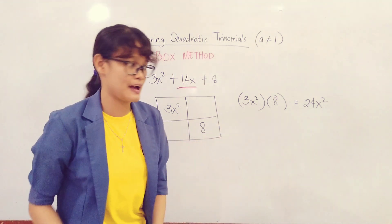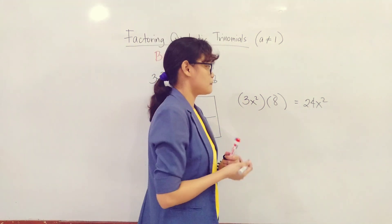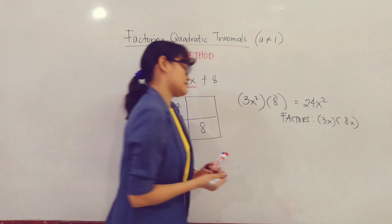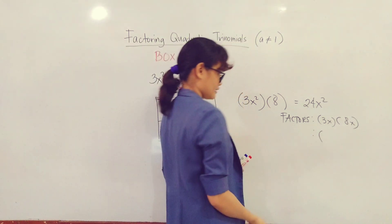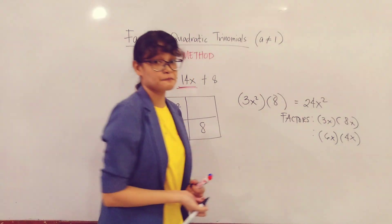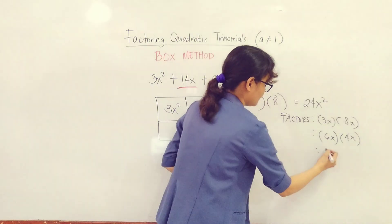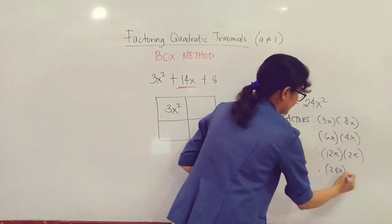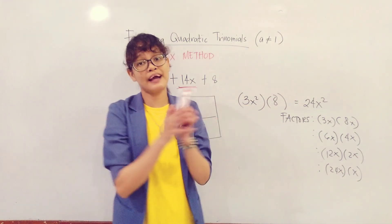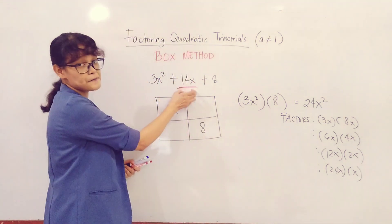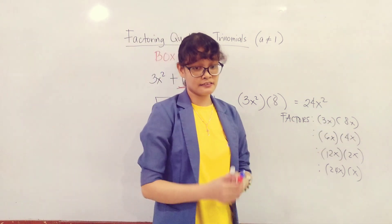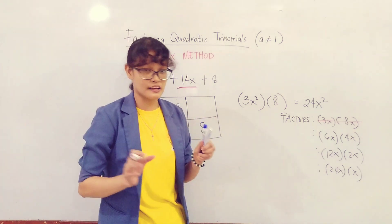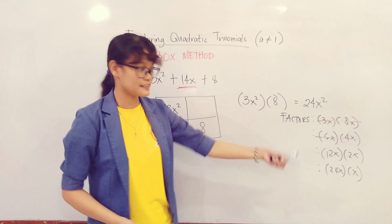So what are the factors of 24x²? Let's start. Since it's x², we'll just add x to the two factors. So you have the factors: 3x and 8x. You also have 6x and 4x. Then you have 12x and 2x. And lastly, you have 24x and x.